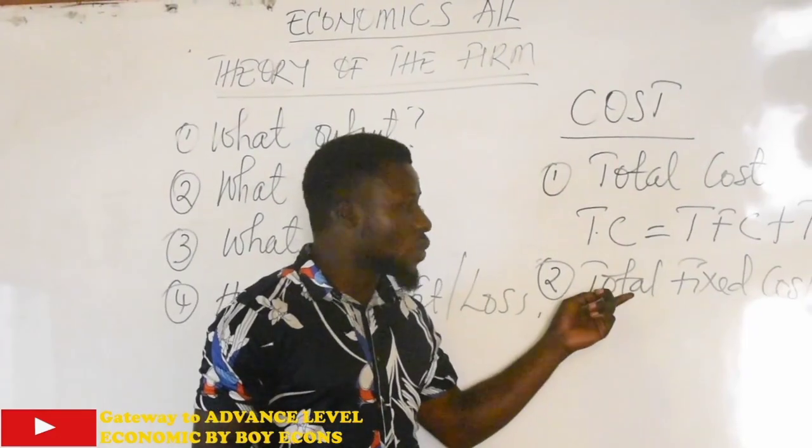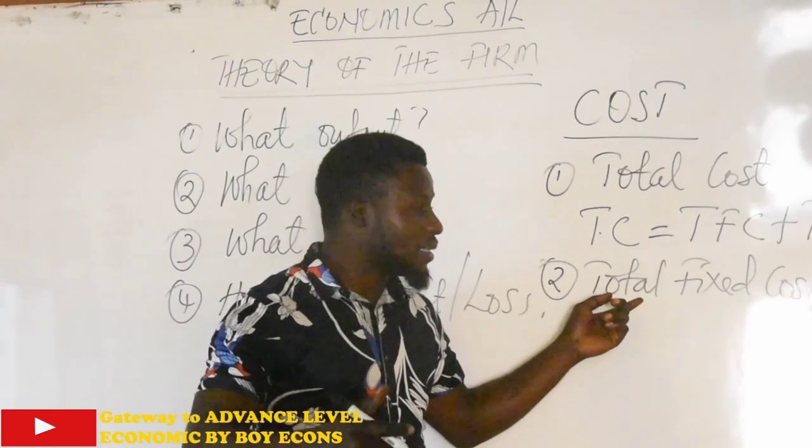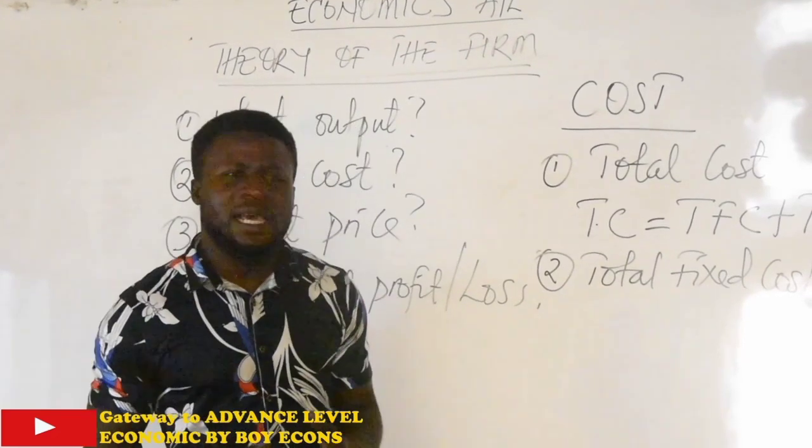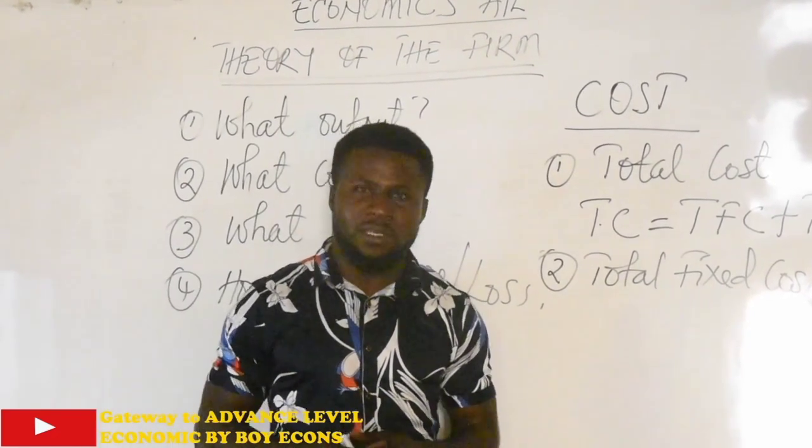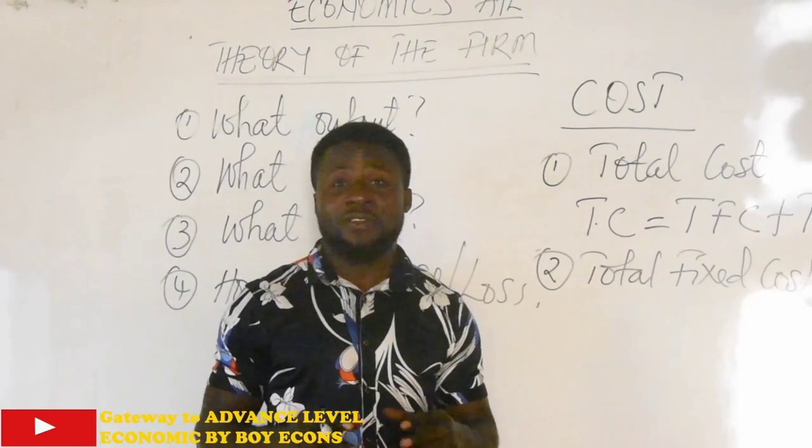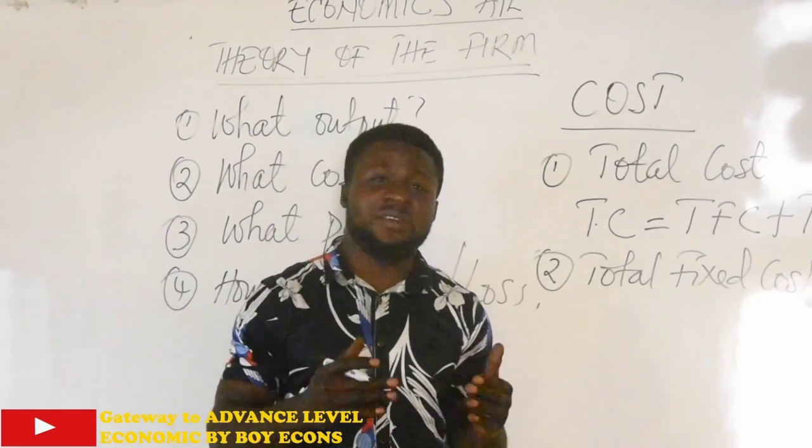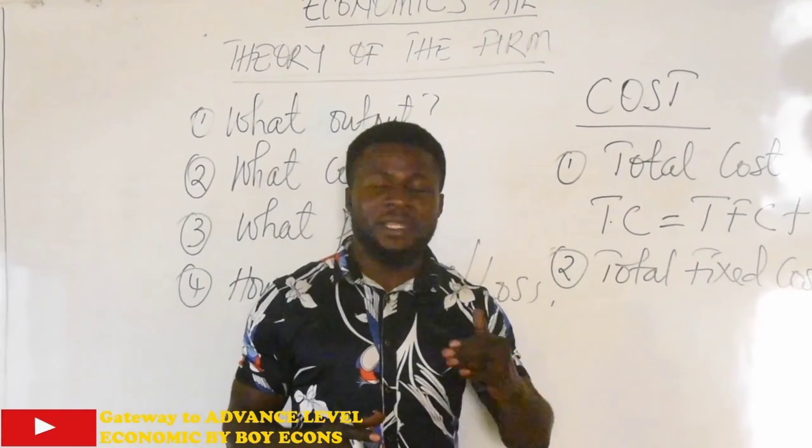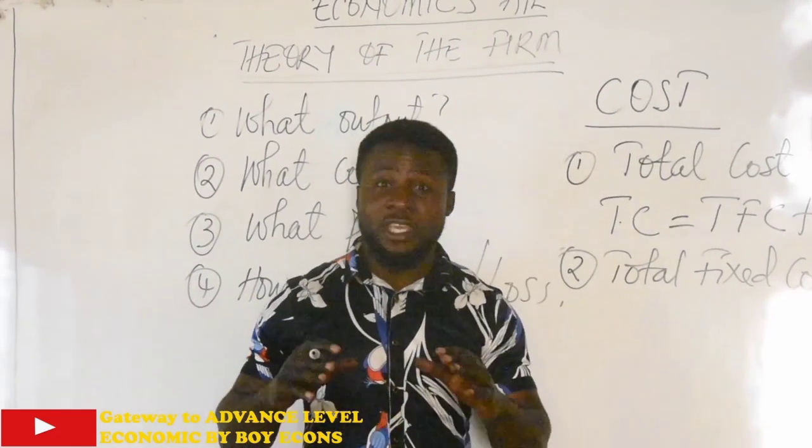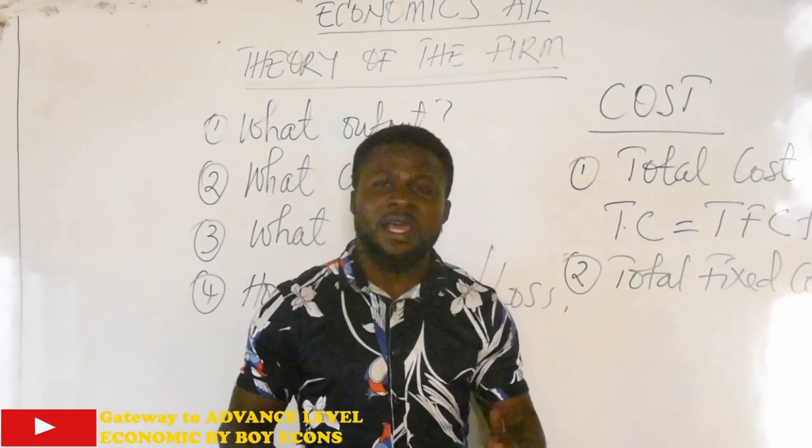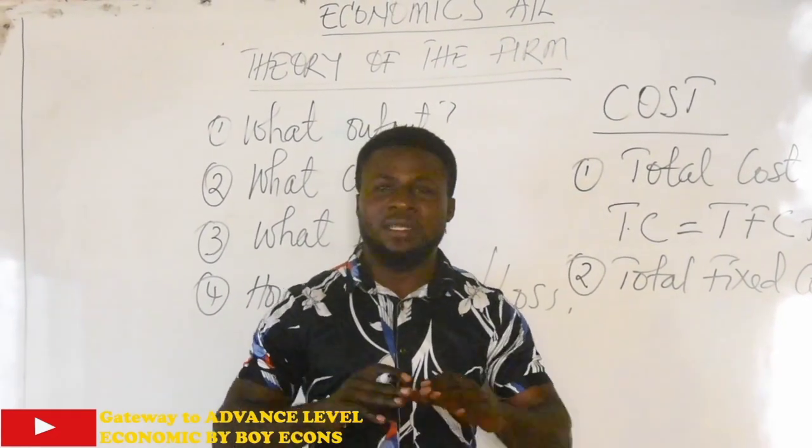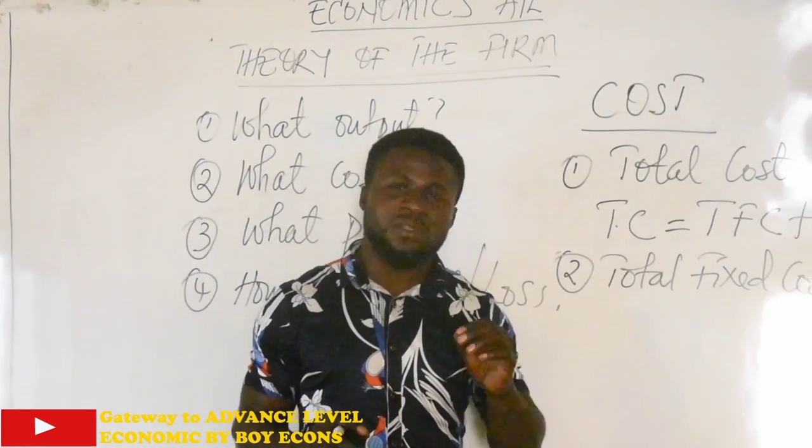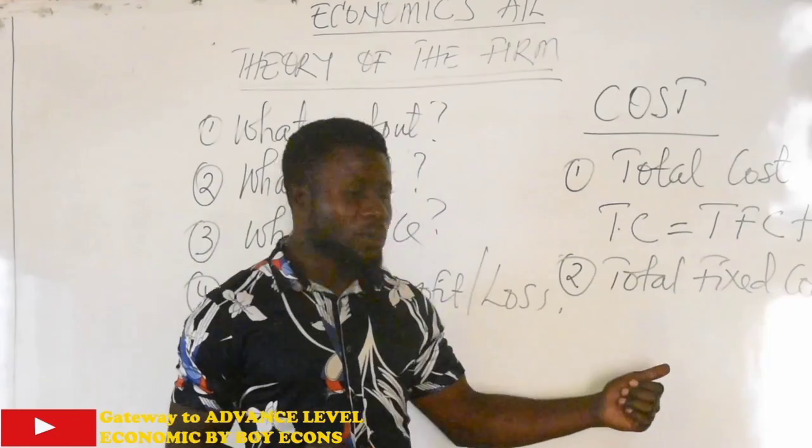That is the reason why we say that land, buildings and machines fall under fixed assets. We also have things like insurance premium. We also have interest rates. When you go to take a loan and you decide on an interest rate, you have agreed on an interest rate or the bank has given you an interest rate. Whether you take that loan and keep it without producing, whether you produce, whether you use only part of the money, the interest rate was already agreed and it doesn't change. So that is why interest is considered as part of total fixed cost.